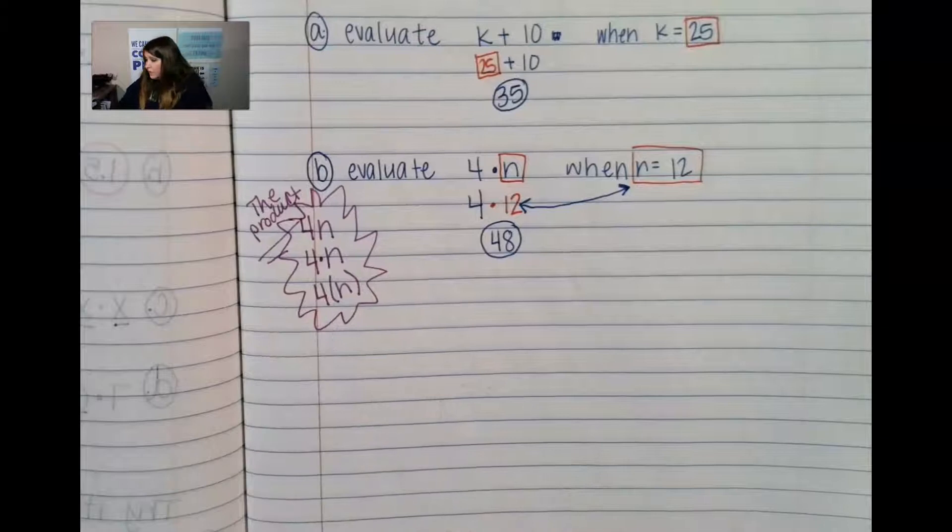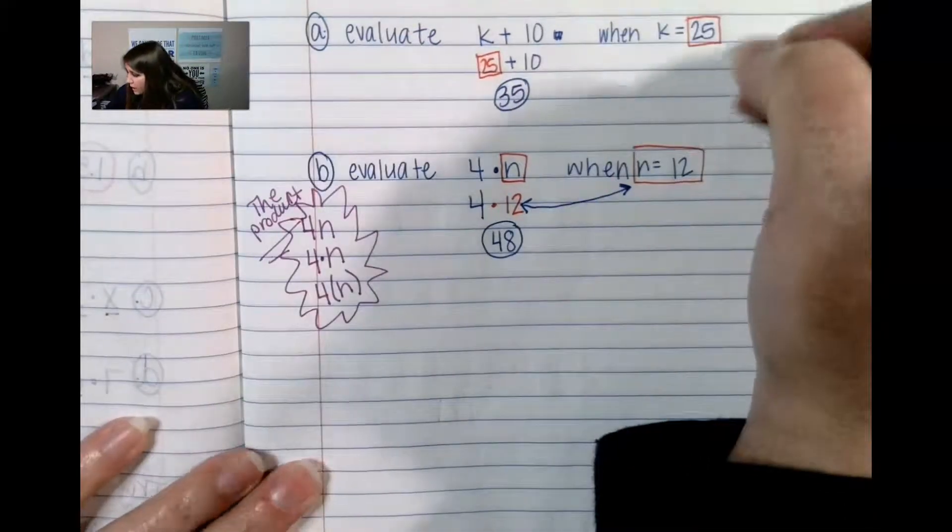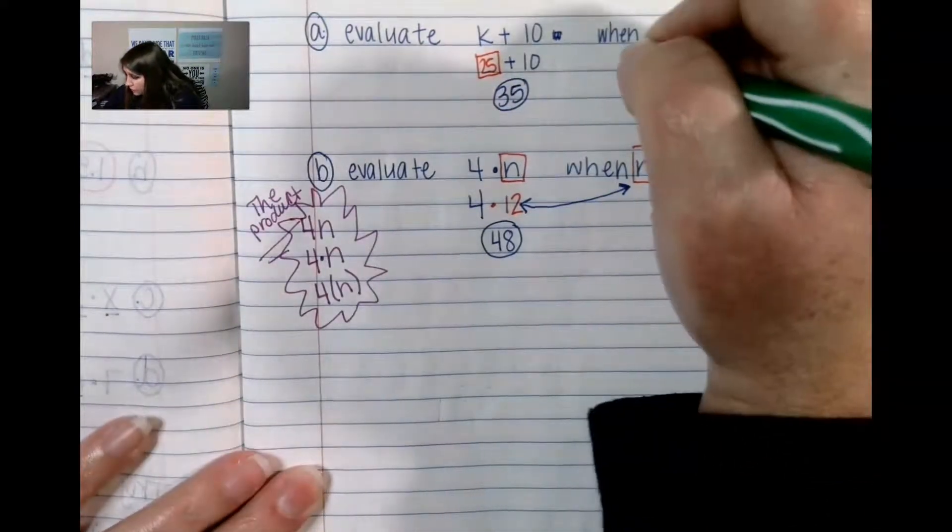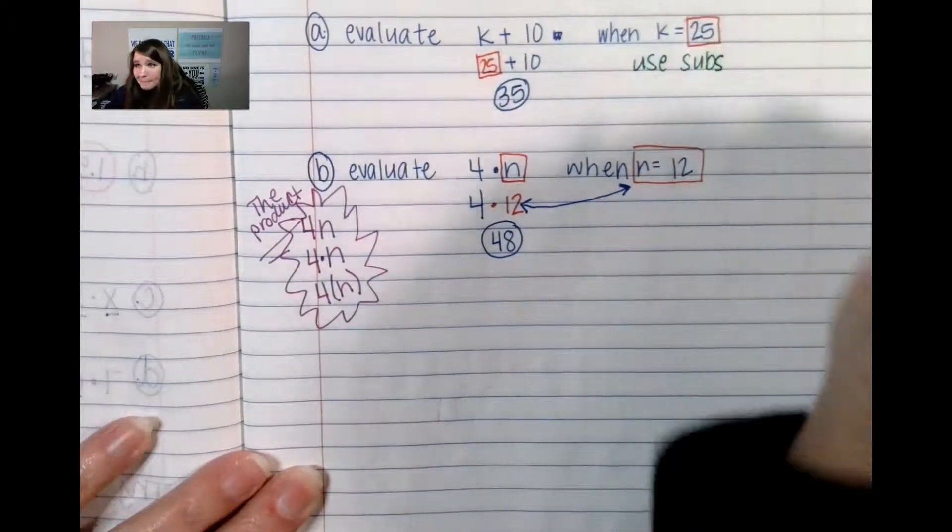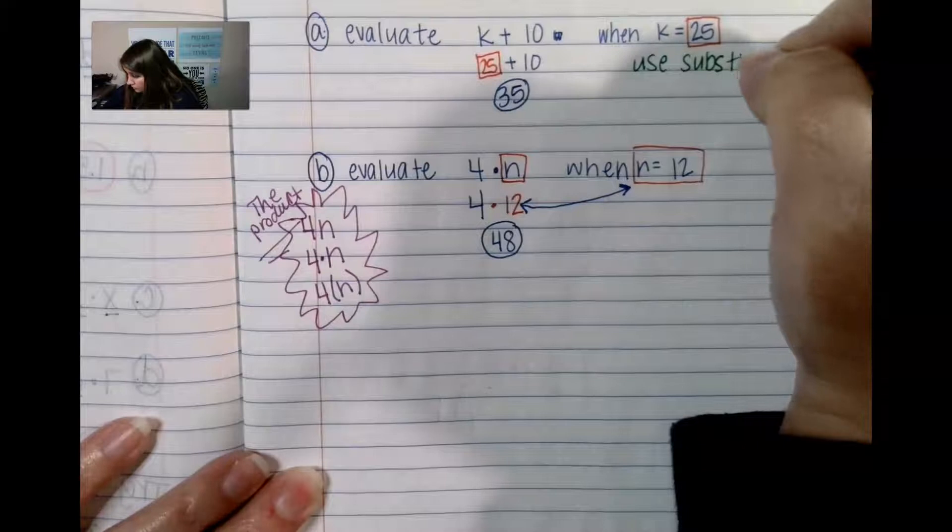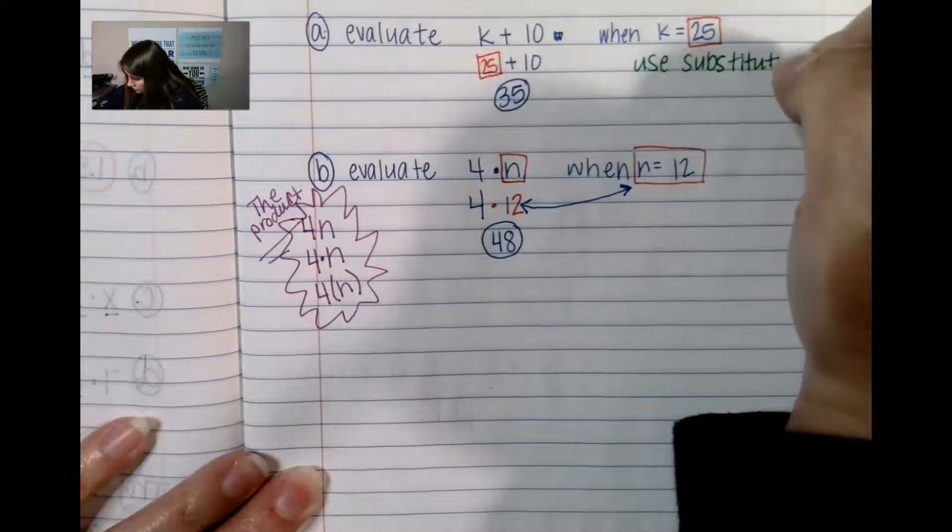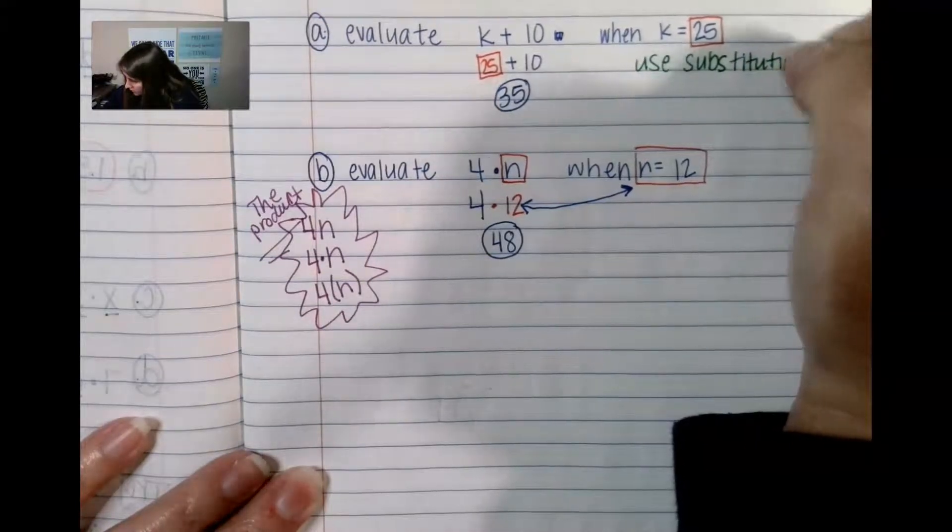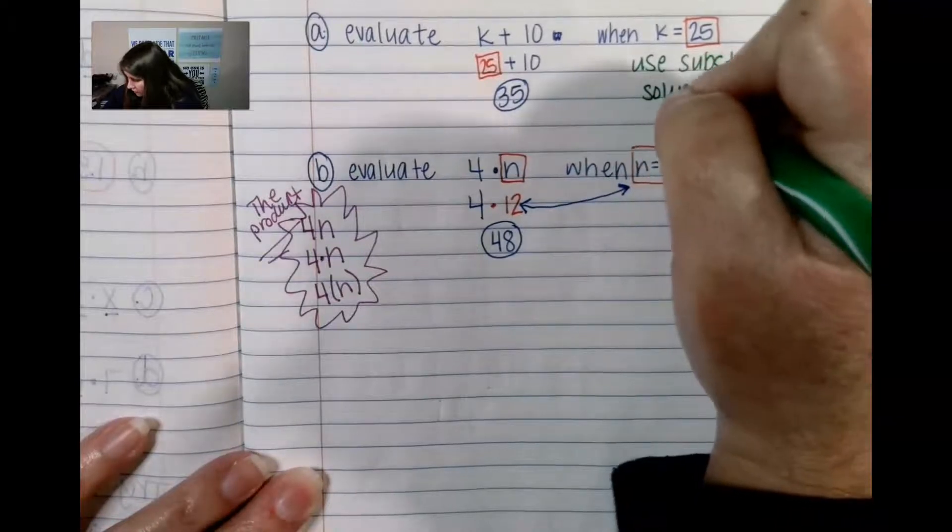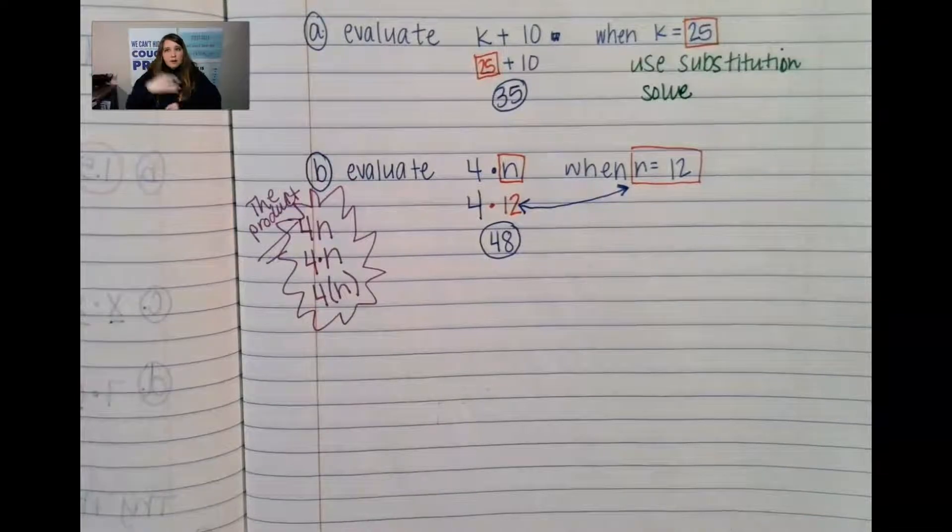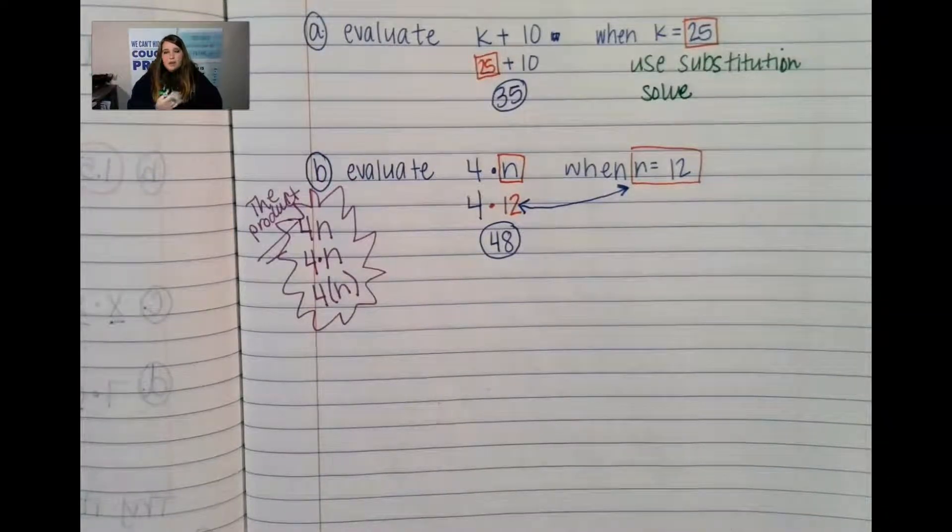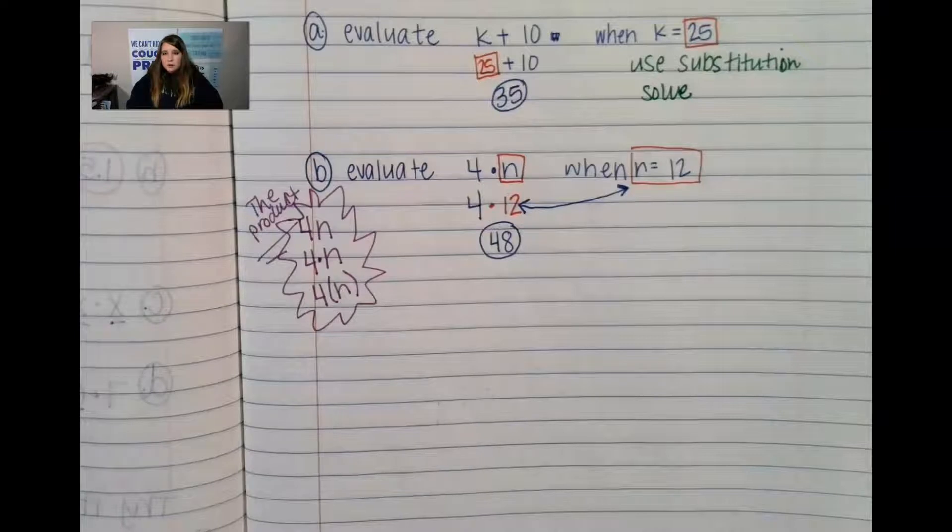So the first step over here. Step one is to use substitution, and then solve. So we use substitution, swap out the variable for the number, and then we solve.